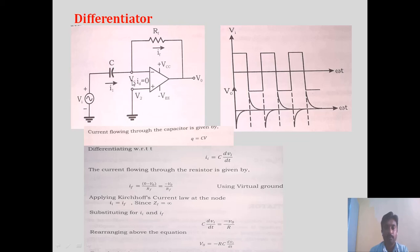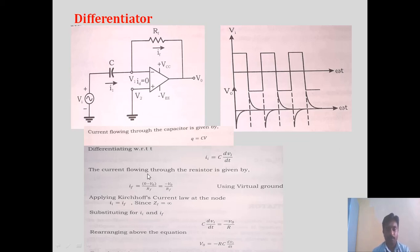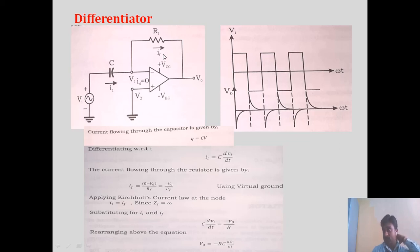Here again V1 is 0 because of the virtual ground concept — V2 is 0, so we can treat V1 as 0, and C · dVI/dT is the current flowing through the capacitor. The current flowing through the resistor in the feedback path is IF.